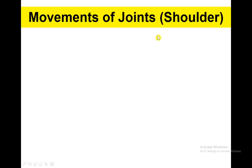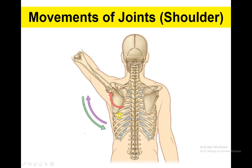Let's talk about the movements of joints, especially in the shoulder part. Here the arrows are representing the movements performed by the shoulder. If you take the arm away from the midline and bring it back, this motion is represented as abduction and adduction respectively.